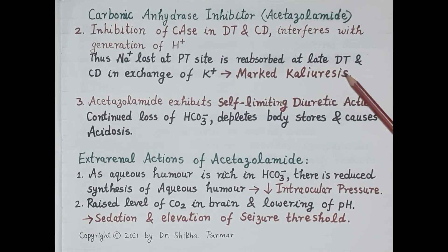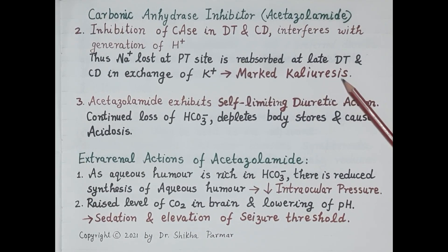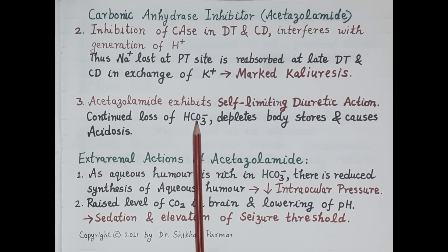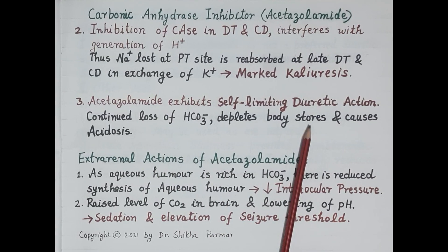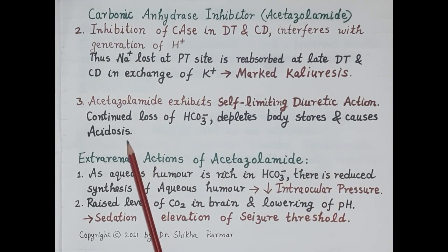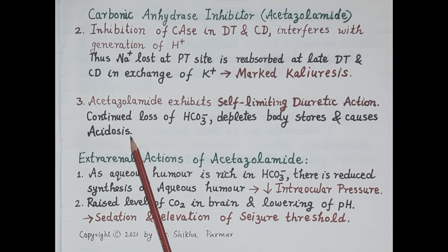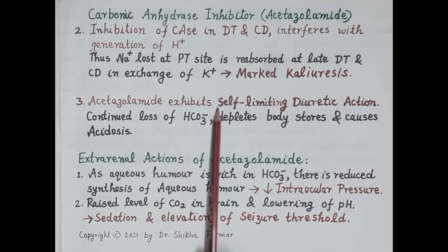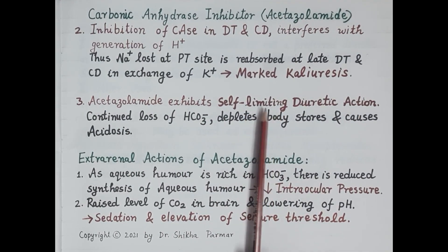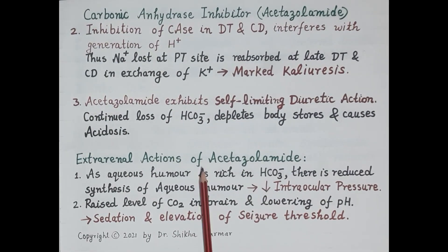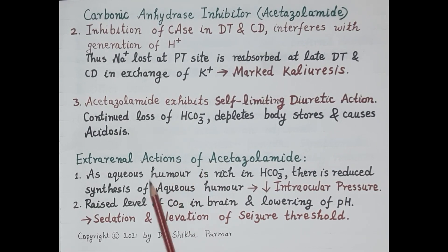This causes loss of potassium in the urine, leading to marked kaliuresis — excessive potassium in the urine. Continuous loss of bicarbonate in the urine depletes the body's bicarbonate stores, causing metabolic acidosis. Metabolic acidosis increases availability of hydrogen ions for exchange with sodium, meaning sodium can be reabsorbed again. Therefore, acetazolamide exhibits a self-limiting diuretic action and is not preferred as a diuretic.